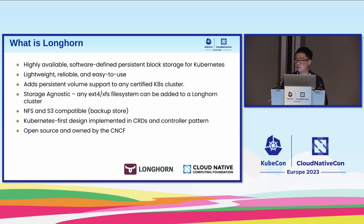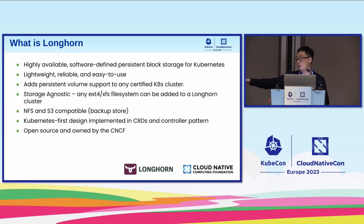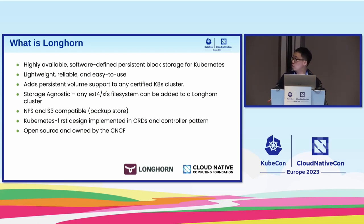Longhorn provides not just in-cluster capability for volumes, but also out-of-cluster capability for backup and restore. You can set up an external backup target — we call it a backup store — supporting NFS and S3 interfaces. You can back up your volume to an external target, then restore to another cluster. Longhorn has no external database for status persistence; it relies on Kubernetes native custom resources. The implementation uses the controller pattern. You can look at our repo — the longhorn-manager — and it's open source, currently incubating in CNCF.